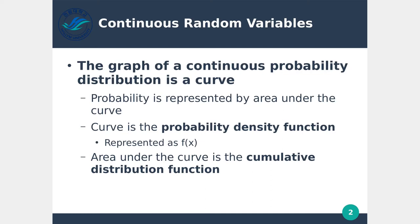The graph of a continuous probability distribution is a curve. Probability is represented by area under the curve — the continuous probability is the area underneath the graph. The curve is the probability density function. You have some sort of probability distribution, and we can represent that curve as a particular function, normally represented as f(x). The area underneath the curve is the cumulative distribution function, and that's where we can get the probability for continuous random variables.